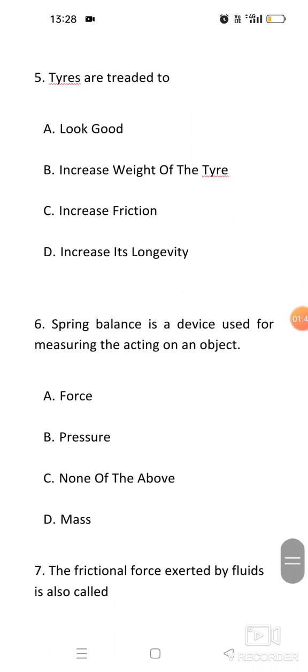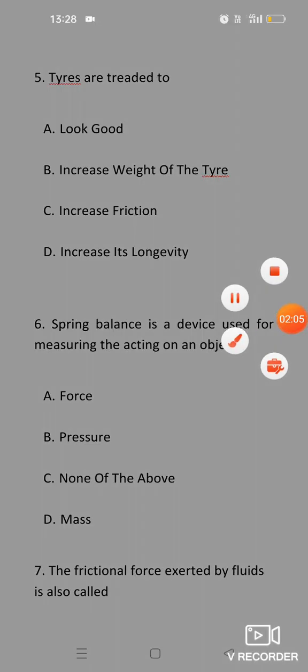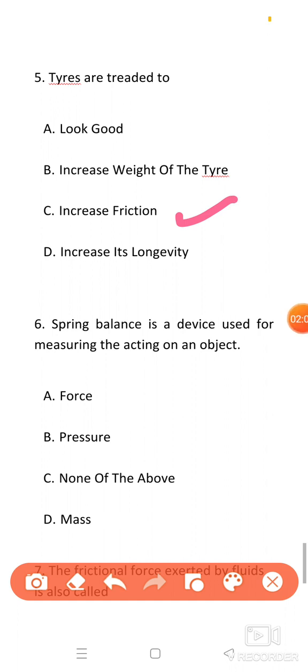Question 5: Tyres are treaded to? The surface of the tyres are very rough. Why? Because to increase the friction so that they can roll very easily on the surface of the road. So its answer will be option C, increase friction.